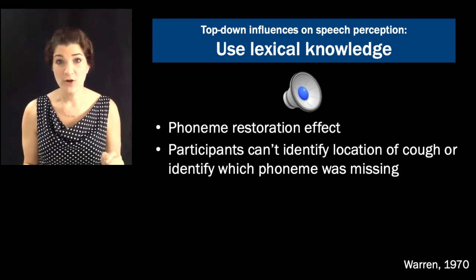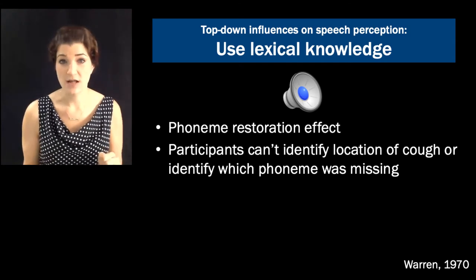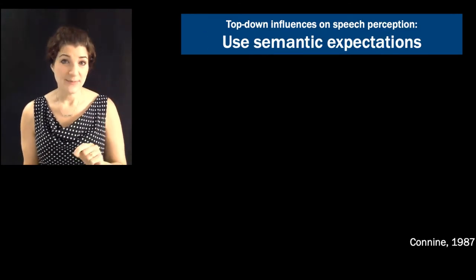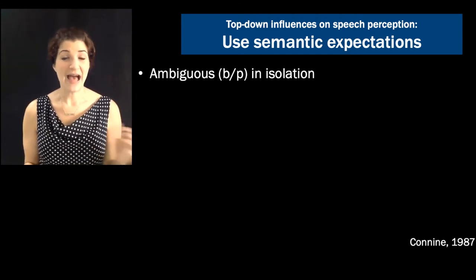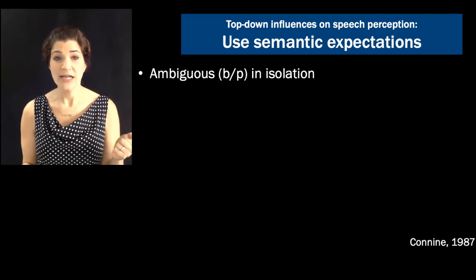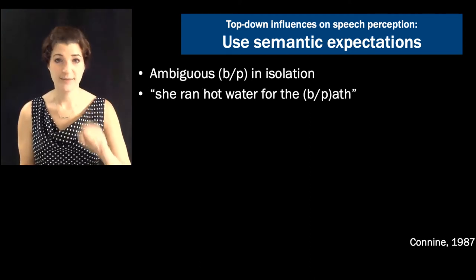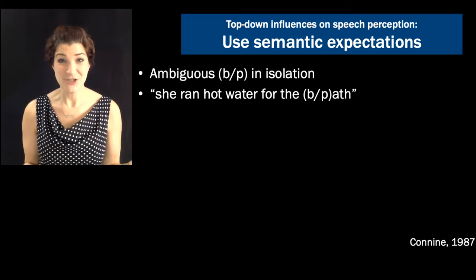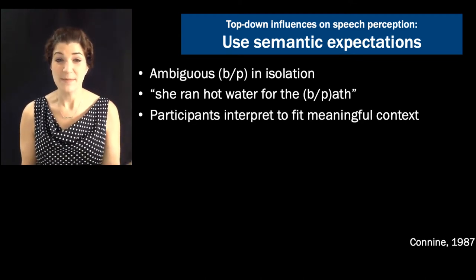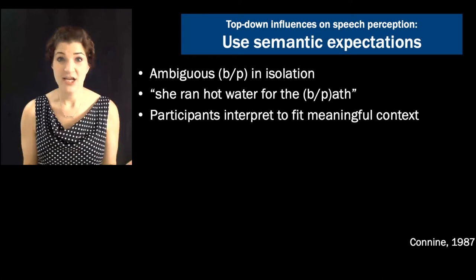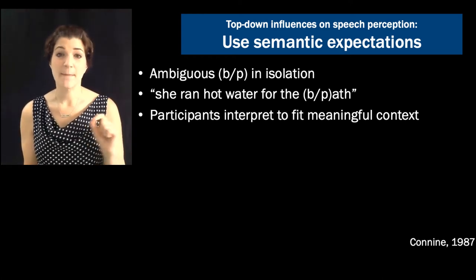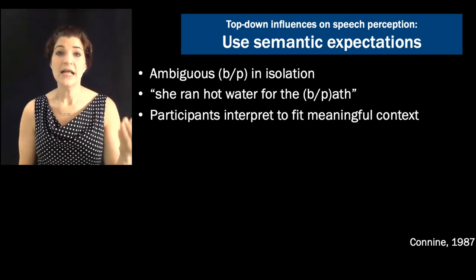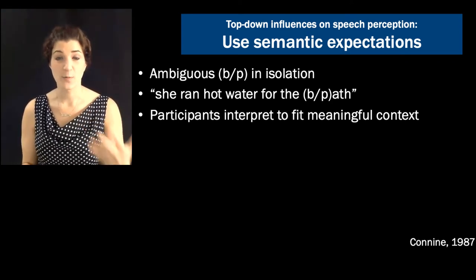So one way that we can overcome the difficulties of the bottom-up signal is by using lexical knowledge. We can also use our expectations based on semantics or meaning. So if I create a sound that is halfway in between and I put it in a word like 'she ran hot water for the path', people typically interpret it in a way that makes it make sense with the meaningful context. If instead I say 'she walked along the lovely garden path', people will interpret that same exact sound as being 'path'. So we use our expectations of what has come before in order to anticipate the words that we're likely to hear.